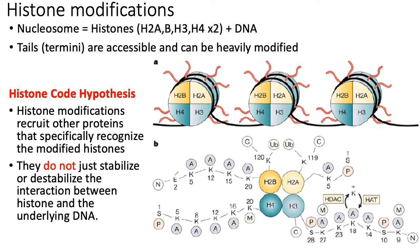Just to go over some brief terminology: a nucleosome consists of a complex of eight histone proteins with DNA wrapped around it. The important point about nucleosomes here is that the tails — the N and C terminals of those histone proteins — are generally accessible and therefore can be heavily modified through post-translational modifications.